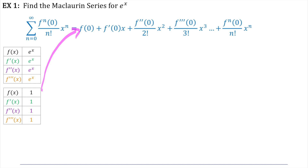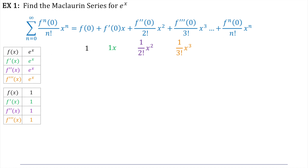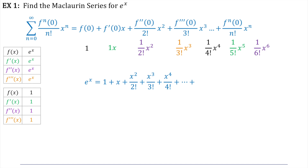And then we'll plug those into the various places on our Taylor polynomial. So f of zero is one. F prime of zero times x is one times x. And now we start into the factorials on the bottom. So we're going to have one over two factorial times x squared, one over three factorial times x cubed. You can guess the next ones: one over four factorial x to the fourth, one over five factorial x to the fifth. We could keep going forever.